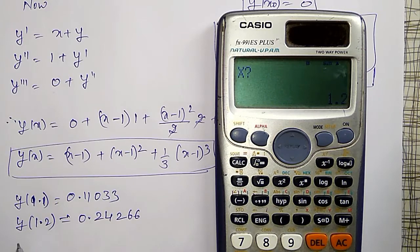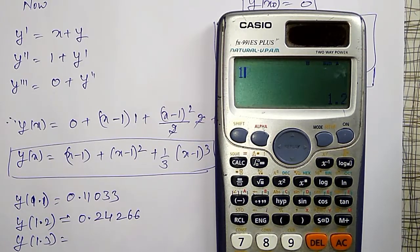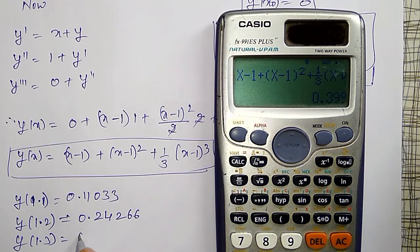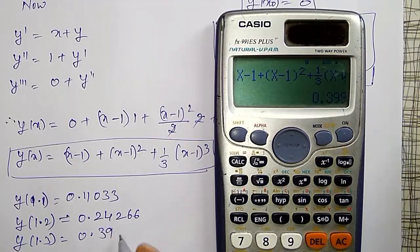Like that, next x = 1.3 also, I can find out, 1.3, its value comes out to be 0.399 and so on.